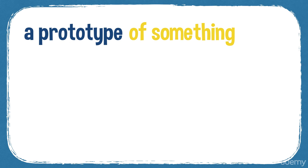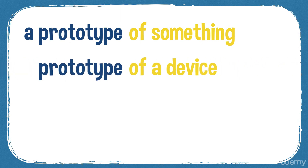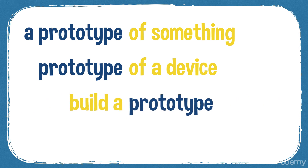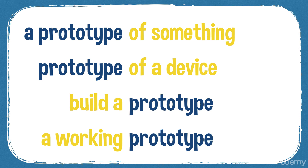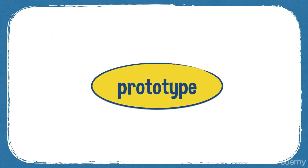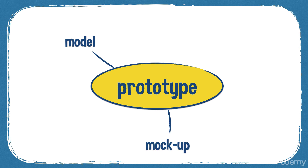You can have a prototype of something such as a device or a car — you build a prototype, and you make a working prototype. The car we looked at was a working prototype: it worked, it wasn't just a model, it does something. 'Model' is sometimes a synonym of prototype, but a model doesn't necessarily work — it just might look like the finished product. Other synonyms include 'mock-up' and possibly 'precursor' — a precursor of a finished product.